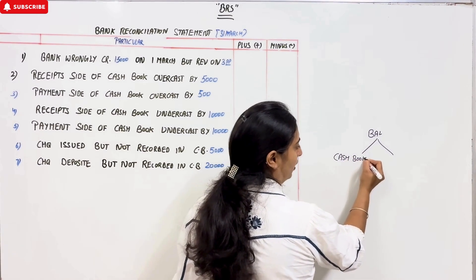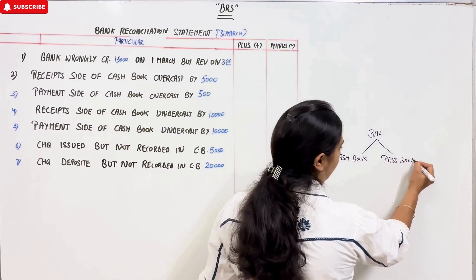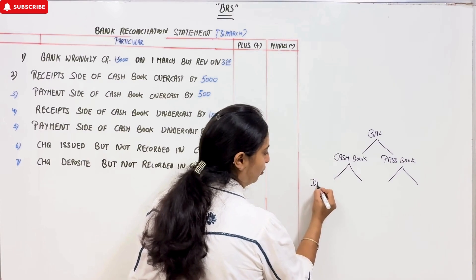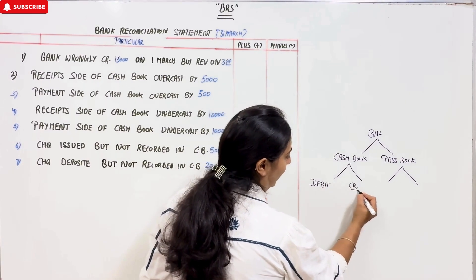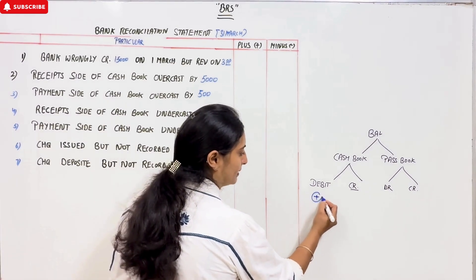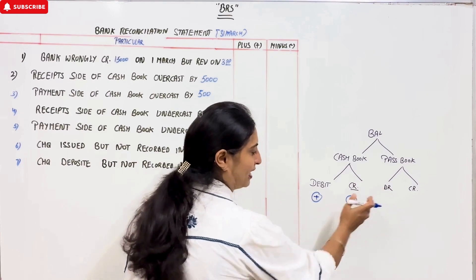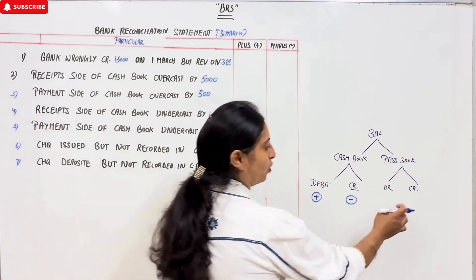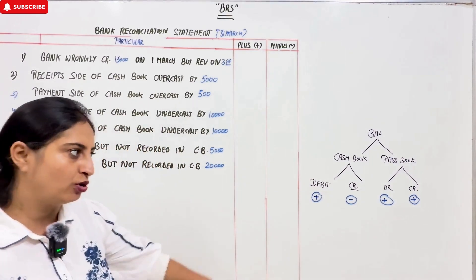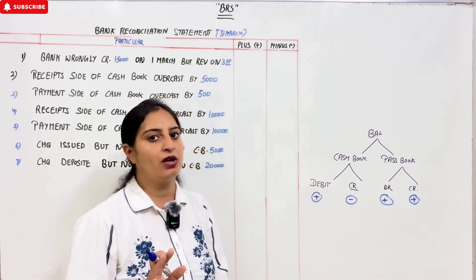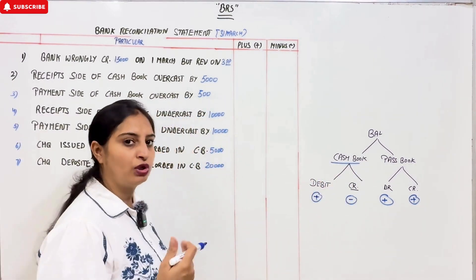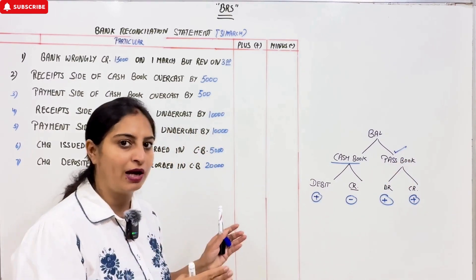Cash book or pass book — these two balances are debit and credit. Cash book debit means favorable balance and credit means unfavorable. Now, debit in cash book means plus and credit means minus. In pass book, it is the opposite. When you have a question, first make a working note with this chart, then you can easily answer. Number 1: which balance is given to you? Cash book. Then we will see every transaction in the pass book, to equal our total of pass book.